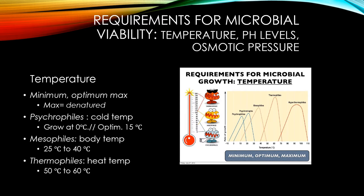Scientists place microbes in one of three categories regarding temperature ranges in which growth can occur: psychrophil, mesophyll, and thermophyll. Whether we're talking about psychrophils, mesophylls, or thermophylls, they all have a minimum, optimum, and maximum growth temperature. Minimum is the lowest temperature at which they can grow, optimum is the temperature at which they grow best, and maximum is the highest temperature at which they can grow.